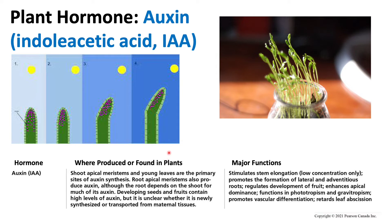Auxin also affects the size and shape of branches and stems. Areas of high auxin concentration promote growth, while areas of low auxin do not. Auxin is also responsible for branch growth: when auxin production is decreased, lateral branches are allowed to develop, whereas when auxin levels are high, lateral branches will not develop. So high auxin suppresses lateral branching, while reduced auxin levels allow lateral branching to occur.